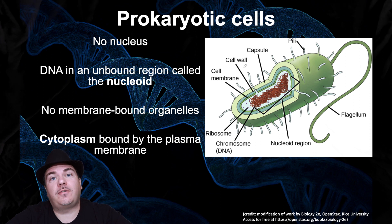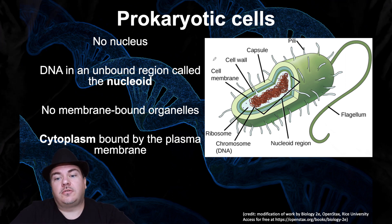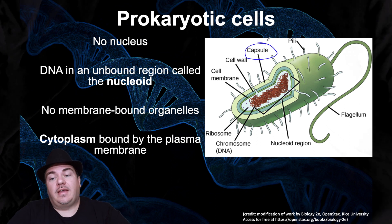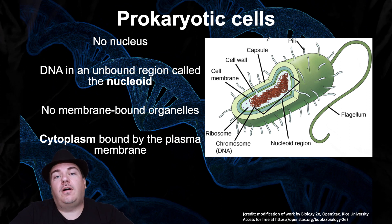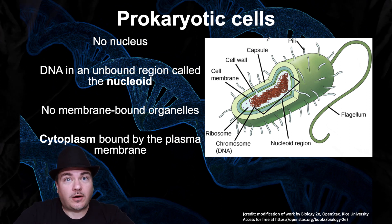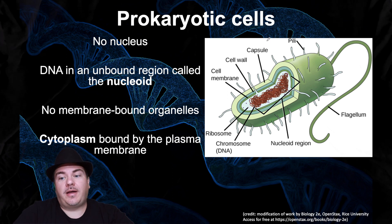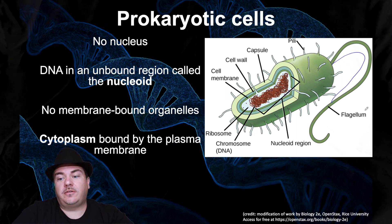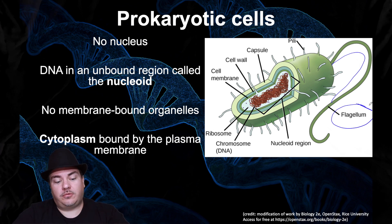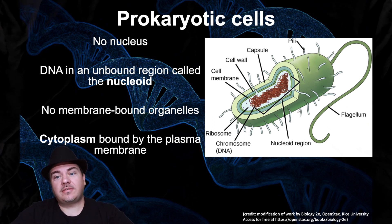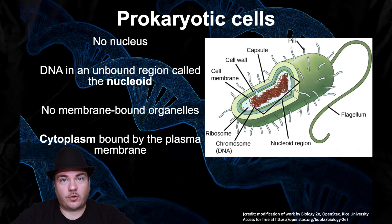Most bacteria also have, outside of the cell wall, a thick slimy coat called a capsule, which protects the bacteria by preventing it from becoming dehydrated. Bacteria also need to be able to move, and since they don't have legs, they can move by having long tails called flagella that spin like propellers, allowing the bacteria to swim through the liquid they live in. So that's the basic structure of a prokaryotic cell like a bacterium.